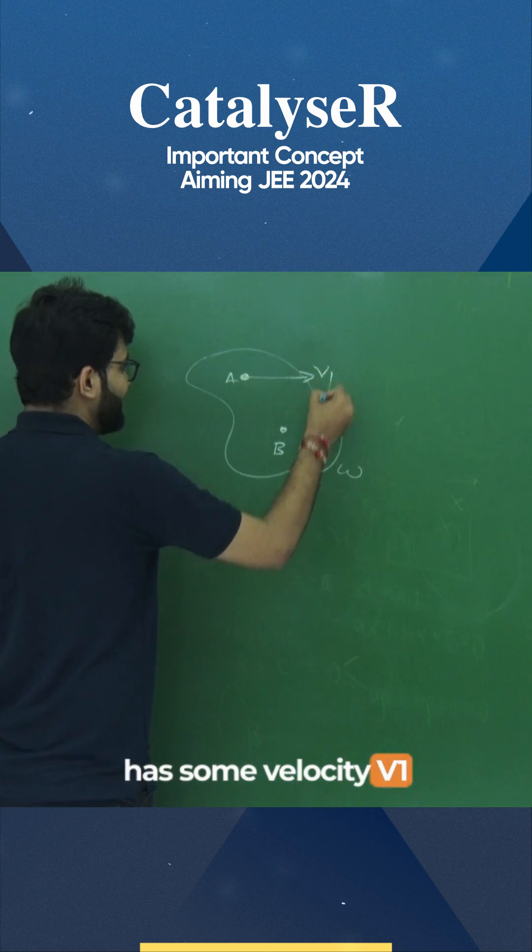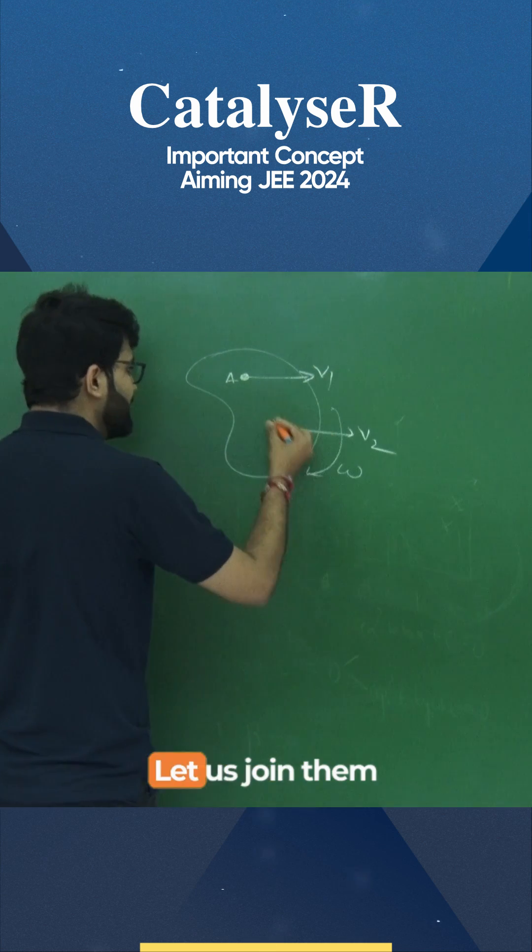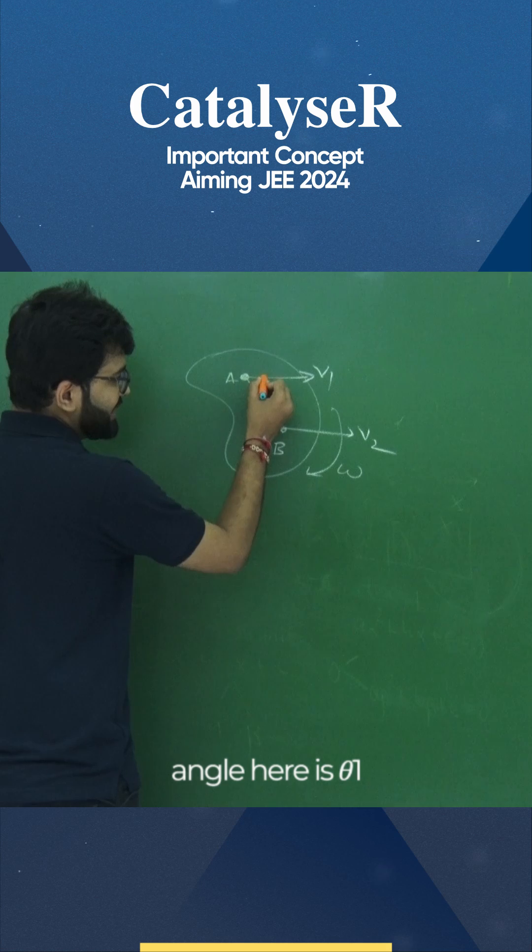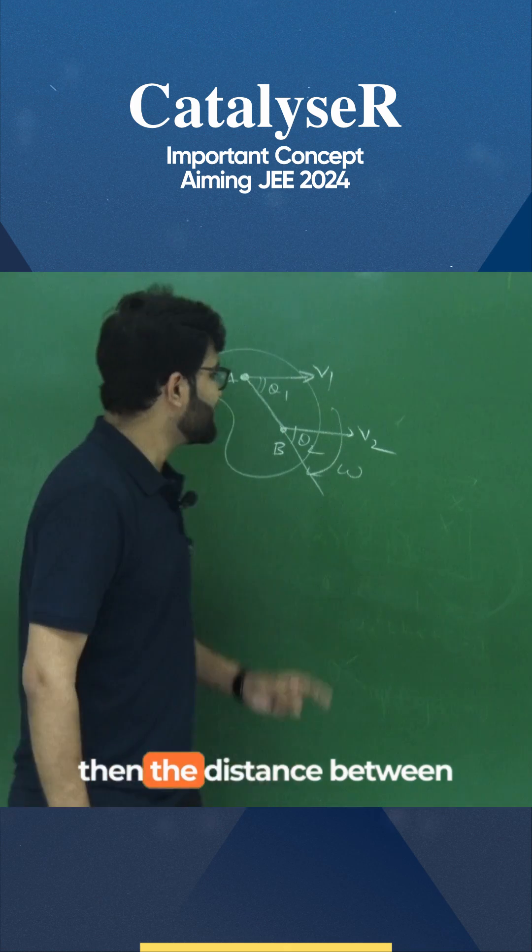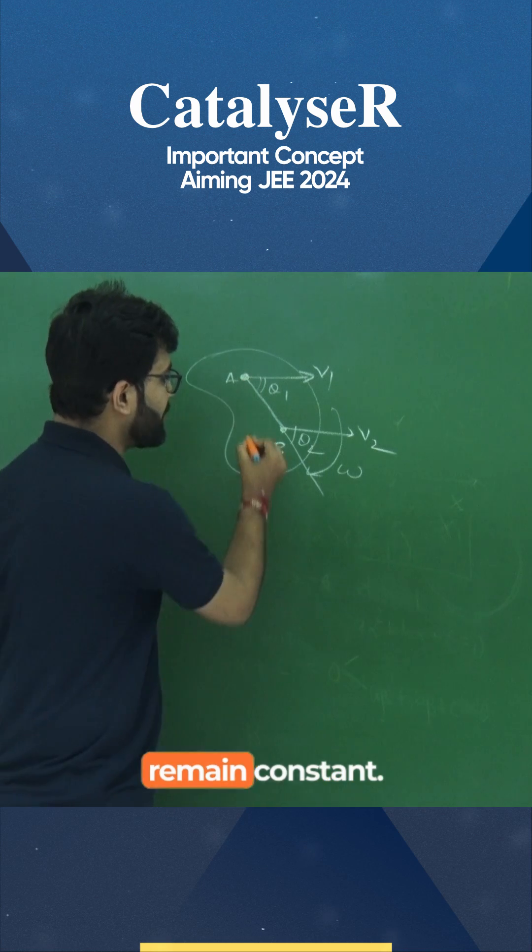Let us say A has some velocity V1, B has some velocity V2. Let us join them. Let us say here the angle is theta1 and here the angle is theta2. So if this is a rigid body then the distance between them should remain constant.